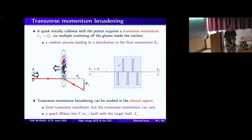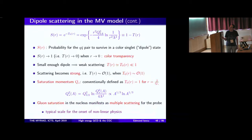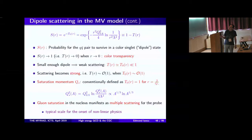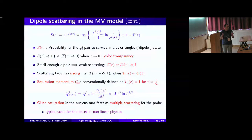Question: Does the S-matrix satisfy unitarity? Yes, of course. When r goes to infinity, S goes to zero, meaning T equals one — it cannot become bigger than one. In the single scattering approximation alone, the exponent grows at large r and violates unitarity. But the resummation of multiple scattering to all orders restores unitarity, because we work with Wilson lines — for any given field configuration a Wilson line is a unitary matrix. After averaging over configurations, you again get a unitary result by construction.